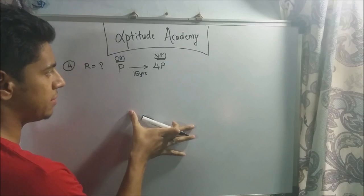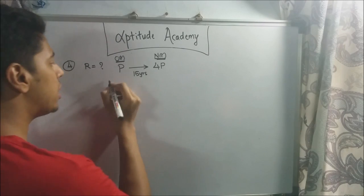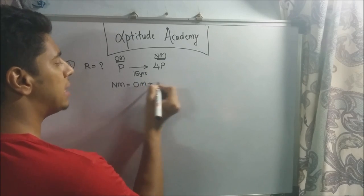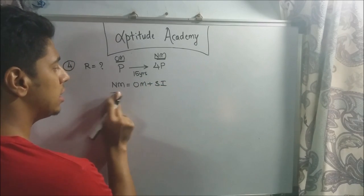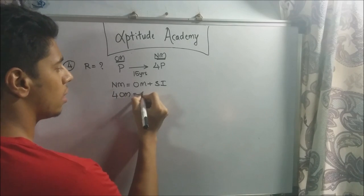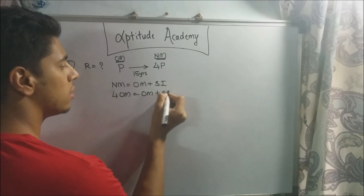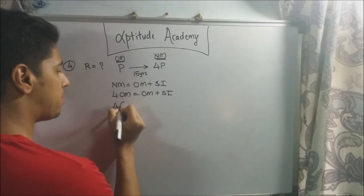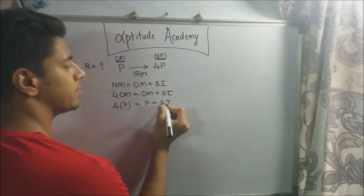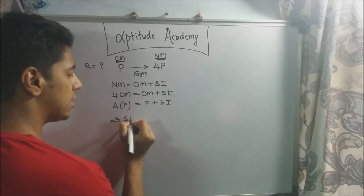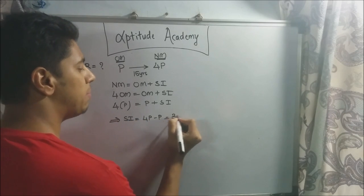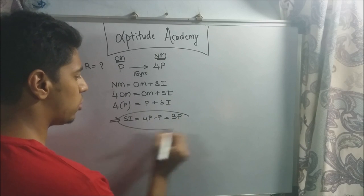New money equals old money plus SI. But new money is 4p, and old money is p, so: 4p equals p plus SI. Therefore SI equals 4p minus p, which equals 3p. So the simple interest is three times the principal — that is the key conclusion.